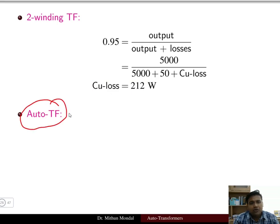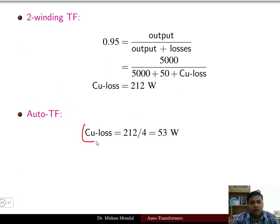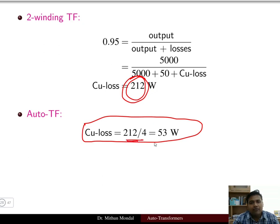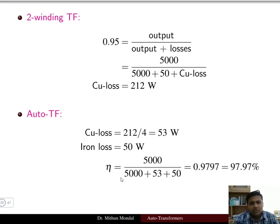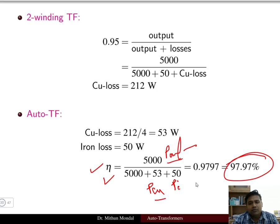For the auto transformer, the copper loss is 1/4 of the two winding value: 212/4 = 53 watt. The iron loss remains 50 watt. Efficiency = 5000 / (5000 + 50 + 53) = 97.97 percent. So the efficiency increases from 95 percent for the two winding transformer to over 97 percent for the auto transformer.